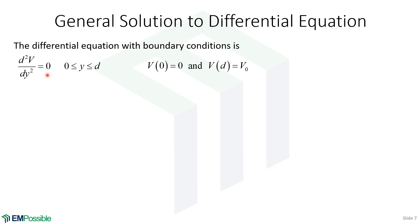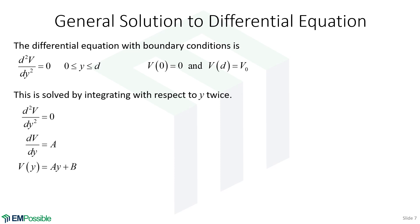Here is our differential equation — the one-dimensional Laplacian — along with our boundary conditions. We integrate twice to get the general solution. The second-order derivative equals zero, so integrating gives a first-order derivative on the left and a constant A on the right. Integrating again gives the electric potential V equals A times Y plus a new constant B. That is our general solution. Now to find A and B, we apply our boundary conditions.